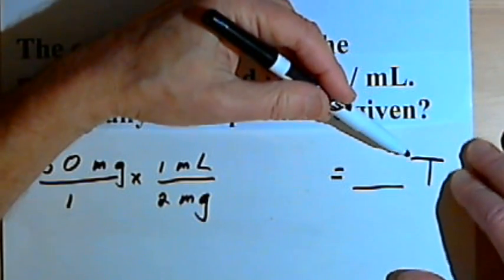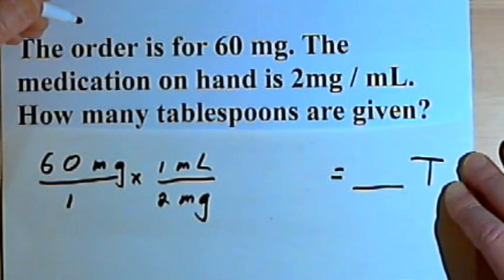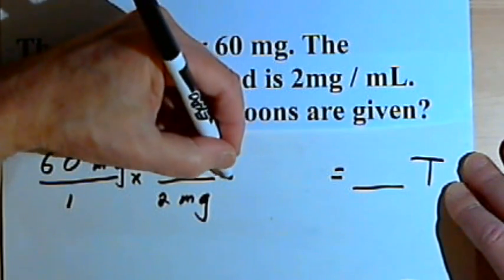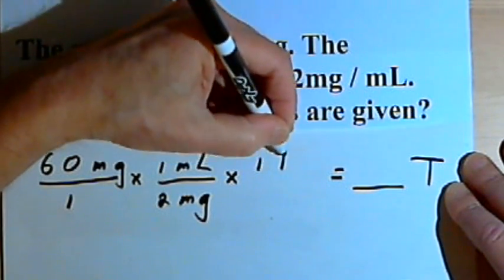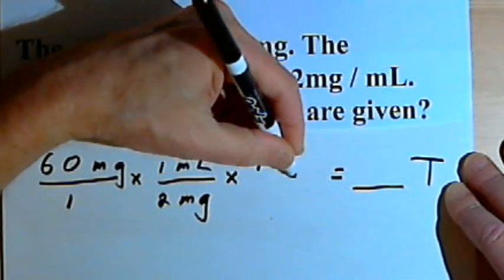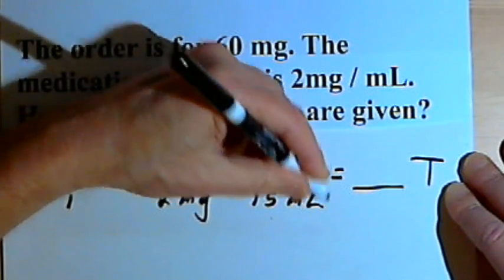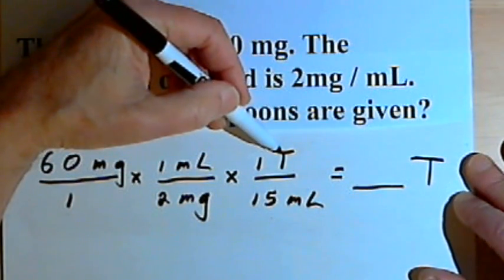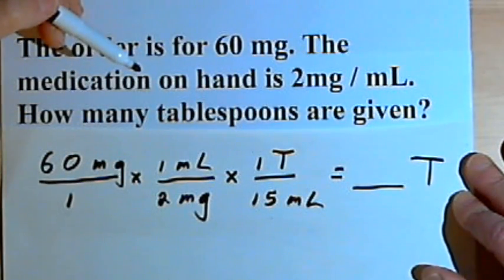The answer has to be in tablespoons, so I'm going to need the conversion — the equivalence — between tablespoons and milliliters. I know there's 1 tablespoon for 15 milliliters, so I'll write a third fraction: 1 tablespoon over 15 milliliters. By putting tablespoon in the numerator, I'll end up with tablespoons in my final answer.